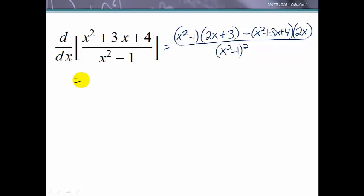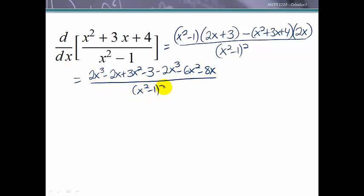Now we typically will want to see if we can simplify the numerator so I'm going to multiply this out. So I have 2x to the third minus 2x plus 3x squared minus 3 minus 2x cubed minus 6x squared minus 8x and this is all over x squared minus 1 squared.